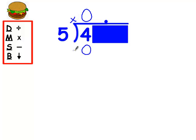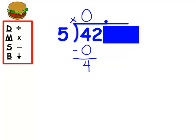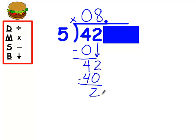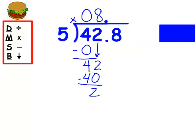Five times zero is zero. When I subtract, I have four left over. Down comes my next number. How many groups of five out of forty-two? I can get eight groups of five out of forty-two. Eight times five is forty. I have two left over. Down comes my last number.